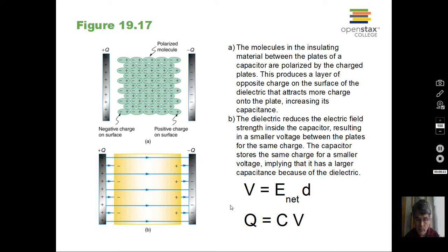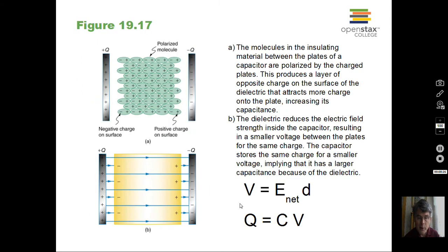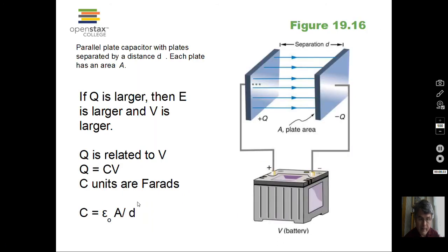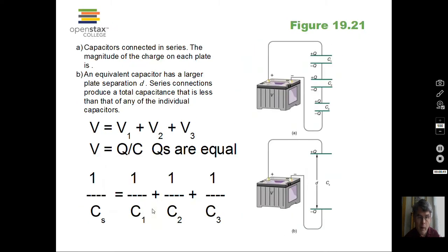We still have this Q equal CV. On the calculation with the geometry effect, there's a kappa, a dielectric constant factor in here. So kappa times epsilon naught times A divided by D. And you can look up the value of kappa in your textbook.